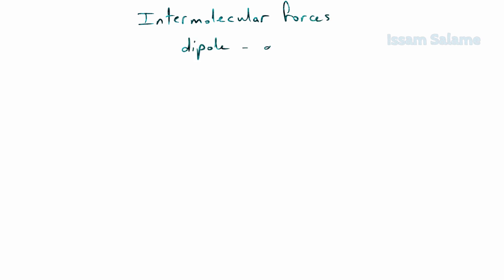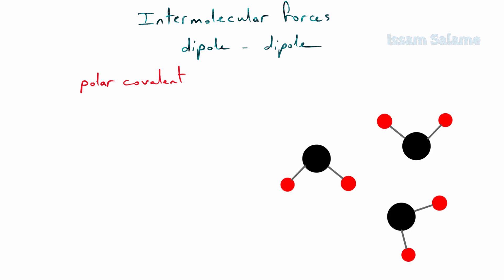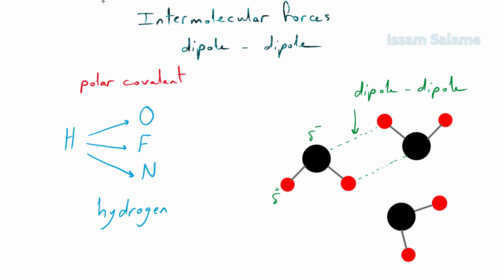Intermolecular forces like dipole-dipole happen in polar covalent compounds. Taking water as an example: oxygen atoms have a partial negative charge while hydrogen atoms have a partial positive charge. This difference in charge causes an attraction between oxygen atoms and hydrogen atoms of adjacent molecules — these are called dipole-dipole forces. The strongest dipole-dipole forces occur when hydrogen is bonded with highly electronegative elements like oxygen, fluorine, and nitrogen — in this case it is called hydrogen bonding.